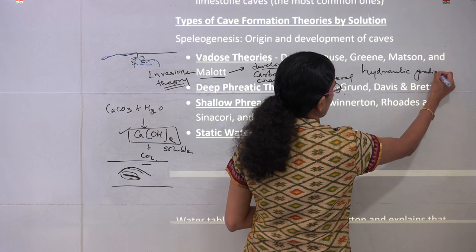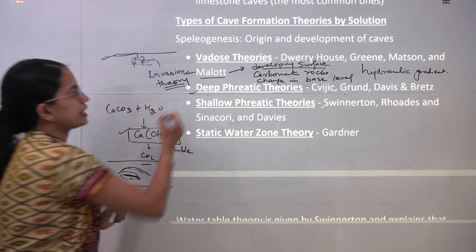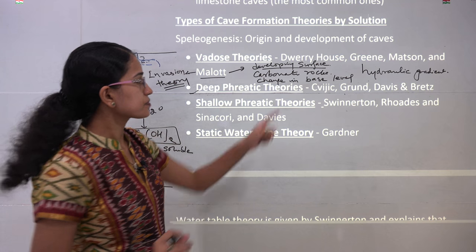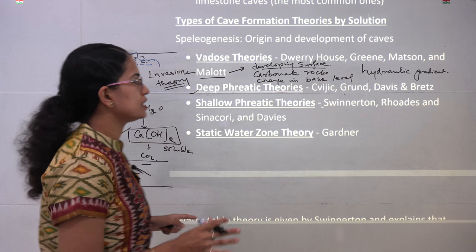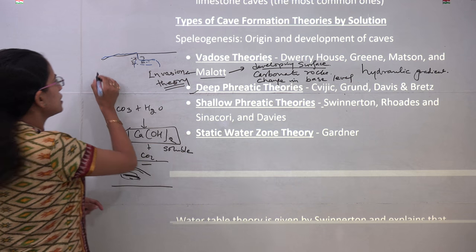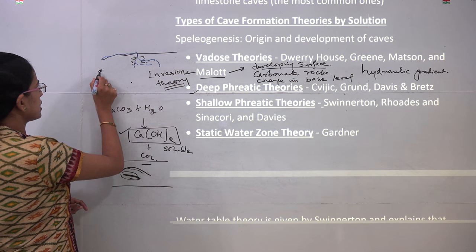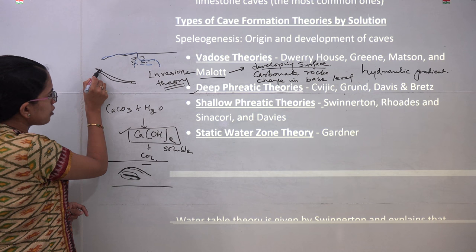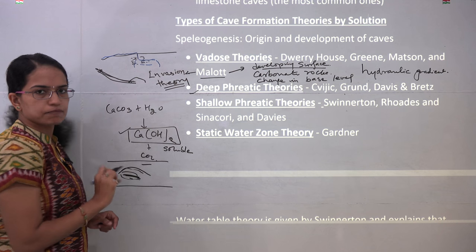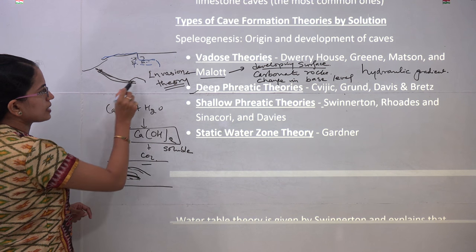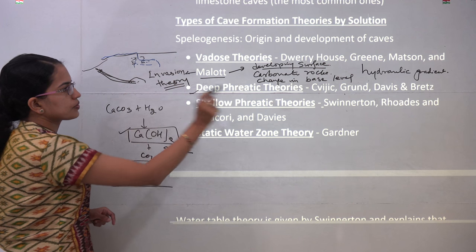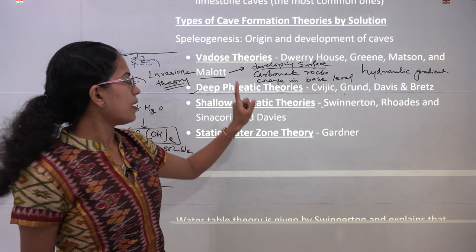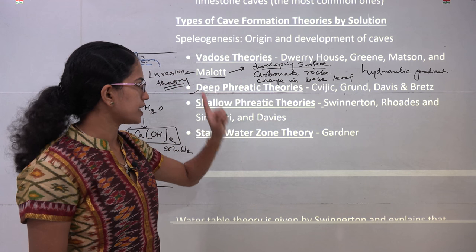The vadose theories talked about hydraulic gradient, while deep phreatic theories talked about hydrostatic head — and there is a difference between the two terms. Hydraulic gradient, put very simply, means you have water at one edge and not at another; due to the hydraulic gradient the water is running down, creating caves somewhere along that path. So you might have a river running here, but the cave formations could be at a different location — and that would be due to the difference in the hydraulic gradient, as put under the vadose theory. We will talk about the hydrostatic head as we move on to the deep phreatic theory.